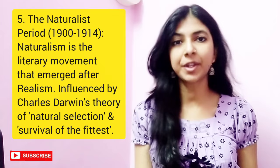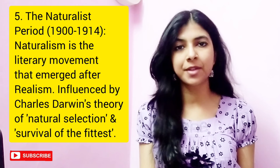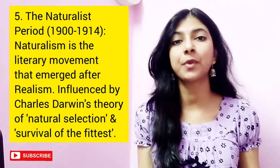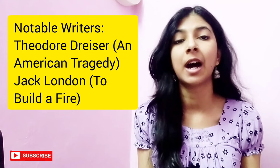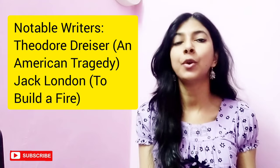Next, we have the Naturalist Period, 1900 to 1914. Naturalism is a literary movement that emerged shortly after realism. It was influenced by Charles Darwin's theory of natural selection and survival of the fittest. Notable writers of this period are Theodore Dreiser, who wrote An American Tragedy, and Jack London, who wrote To Build a Fire.